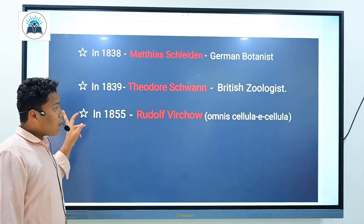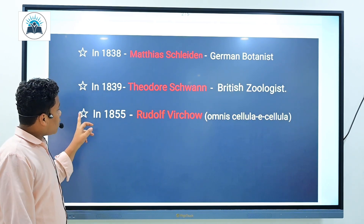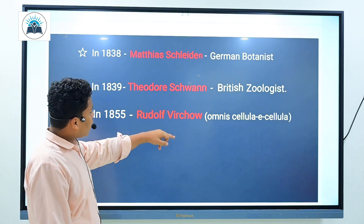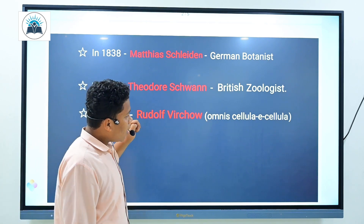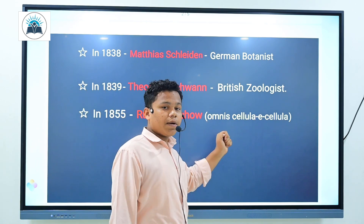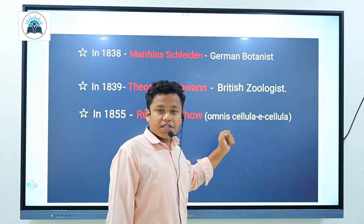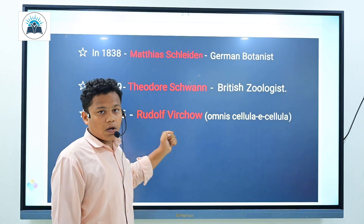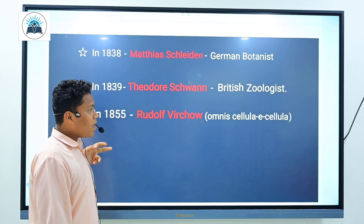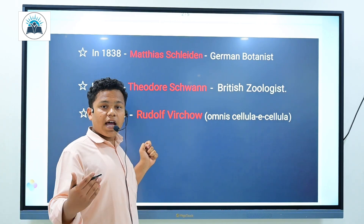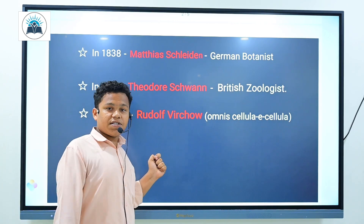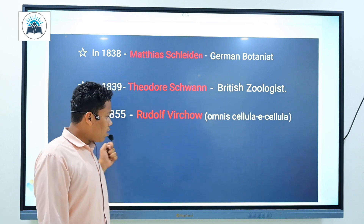Then here comes Rudolf Virchow. In the year 1855, he gave a statement: Omnis cellula e cellula. It means that new cells arise from pre-existing cells.